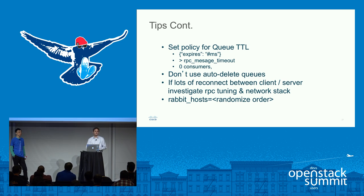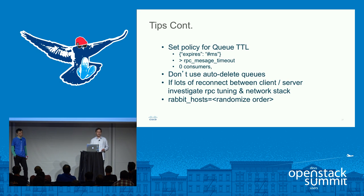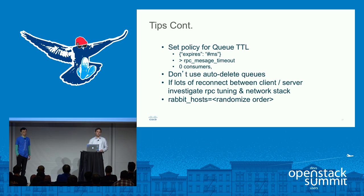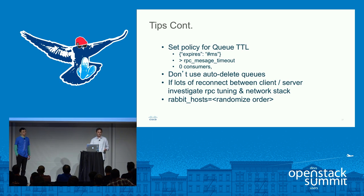You definitely want to set a policy for queue TTL — you set this with expires and the number of milliseconds. Just set it to something greater than the RPC message timeouts. If there are zero consumers, Rabbit will go in there and clean it up for you. This is really useful for cleaning up orphan queues. Sometimes if a hypervisor goes down, you'll have a queue that'll sit there pulling up more and more messages and eating up a lot of memory. By setting a policy, you can have Rabbit clean those up for you. Also, don't use auto-delete queues if you have the option — it's much safer to use a queue TTL because when a node fails over there's a race condition where Rabbit may auto-delete the queue before someone else actually binds.